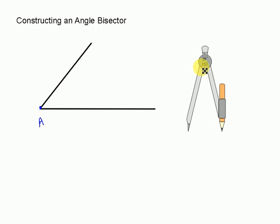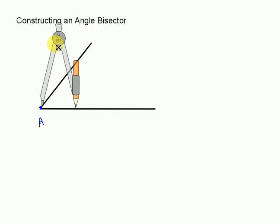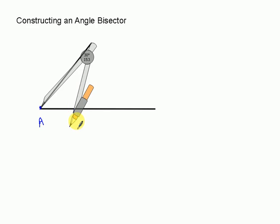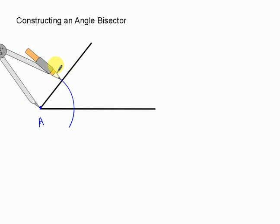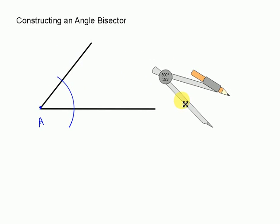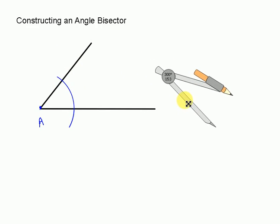Take your compass and take the pivot point, place it at point A. Now we're simply going to draw an arc — any arc. It doesn't matter what your radius is on your compass; you could have chosen any radius. Now we have two intersection points: this is point B, and then we've got another intersection point right there we can label as C.